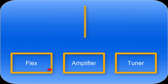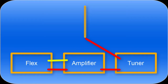Next we have our coax, which connects the radio to the amplifier, runs through the tuner, and then to the antenna. Next we run a control line from the radio to the amplifier. This line will key the amplifier when the radio transmits.